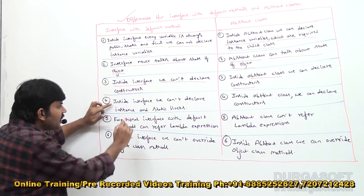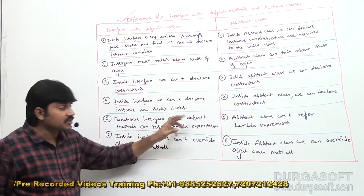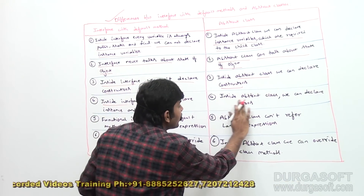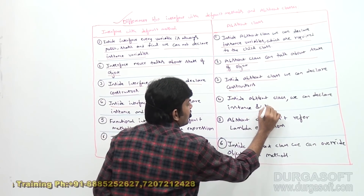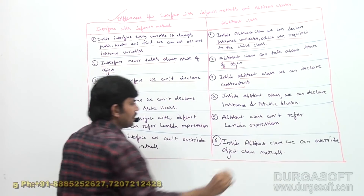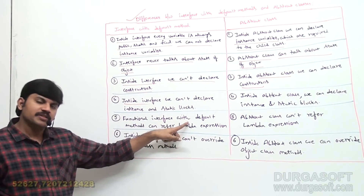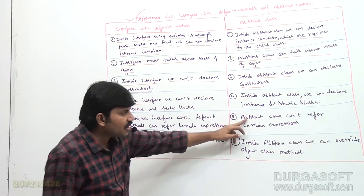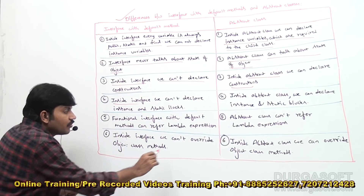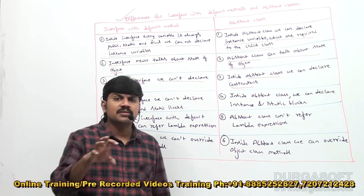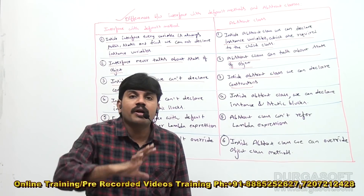Inside an interface we can't declare instance blocks or static blocks. But inside an abstract class we can declare both instance blocks and static blocks. Next, a functional interface with a default method can refer to a lambda expression, but an abstract class cannot refer to lambda expressions.